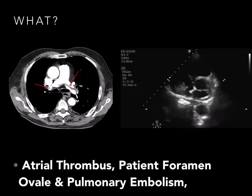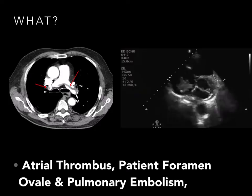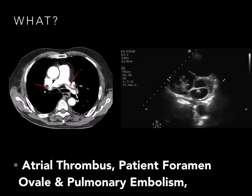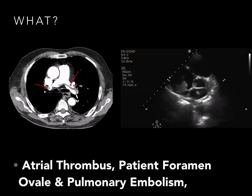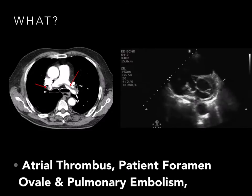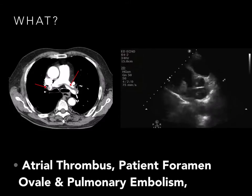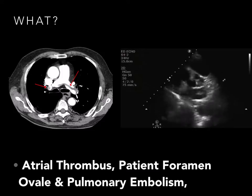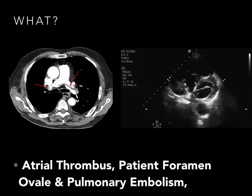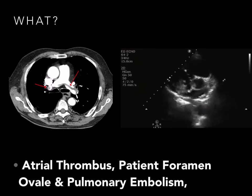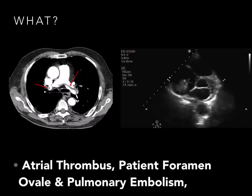Through a bedside echo, this dynamic intern duo diagnoses a large right atrial thrombus. Close inspection of the video also shows that the patient has a PFO — patent foramen ovale — and clot can be seen moving between the right and left heart.